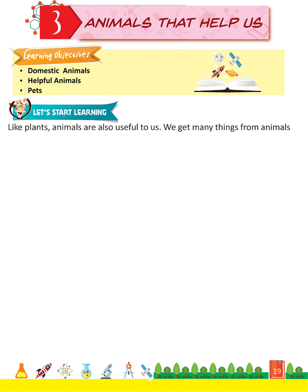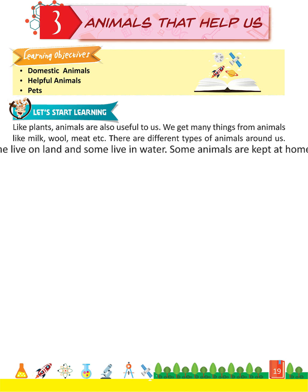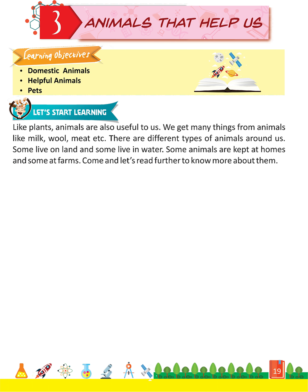Like plants, animals are also useful to us. We get many things from animals like milk, wool, meat, etc. There are different types of animals around us. Some live on land and some live in water. Some animals are kept at homes and some at farms. Come and let's read further to know more about them.